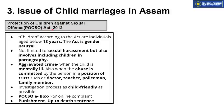POCSO Act ka full form hai Protection of Children Against Sexual Offences Act, and this act was brought in 2012. Is act ke hisaab se children have been defined as those individuals who are below 18 years of age. Is act mein children ke khilaf sexual offense karne waalon ke khilaf kya kya karwai ki ja sakti hai — uske baare mein provisions likha gaya hai. Children ke against sexual offense karne ko criminal offense bataya gaya hai, and the penalties are of a higher degree.